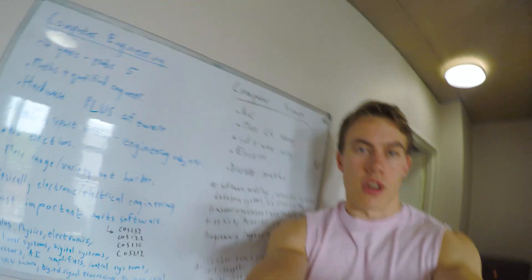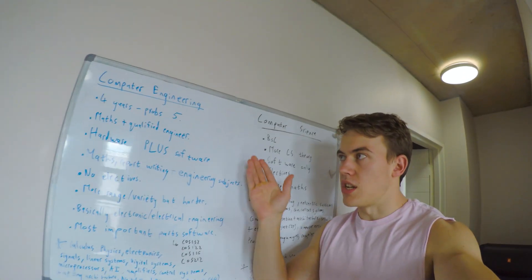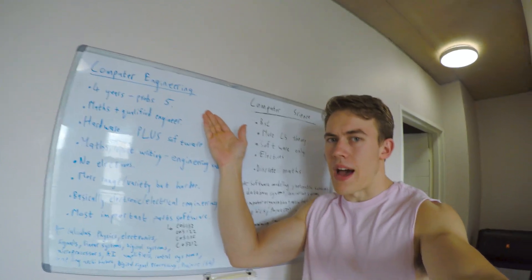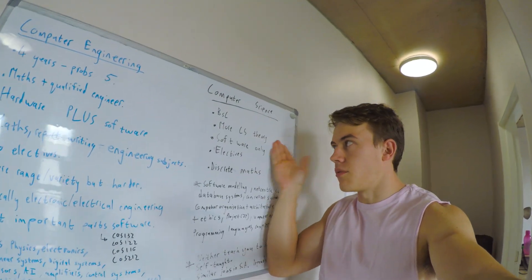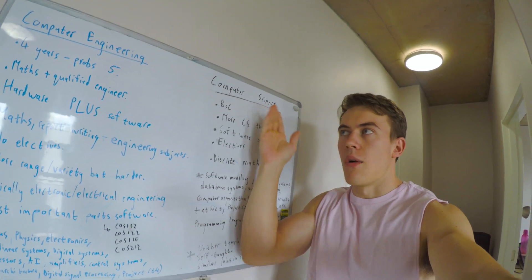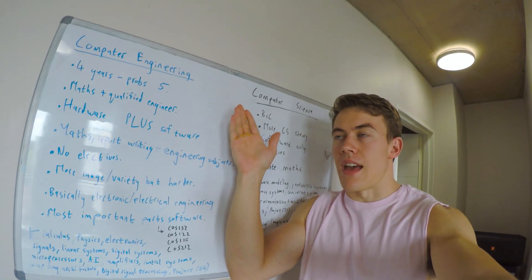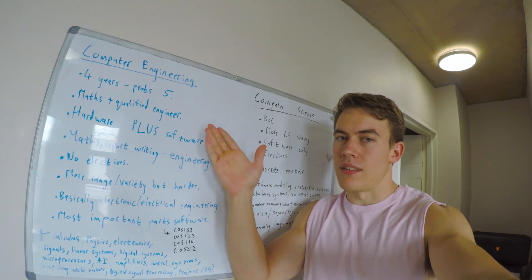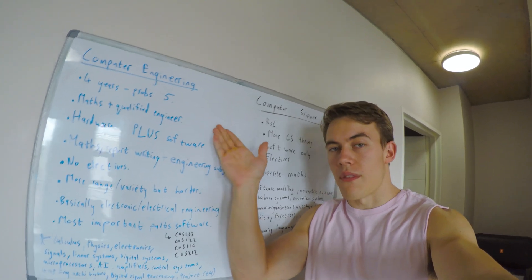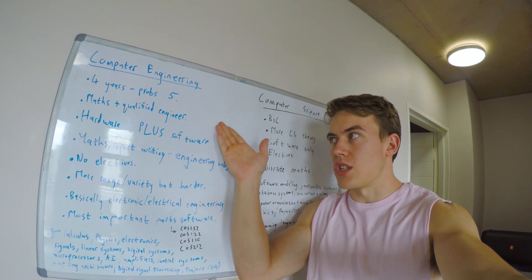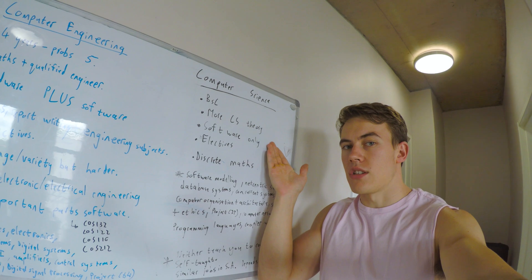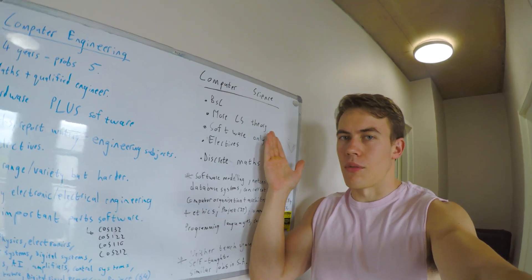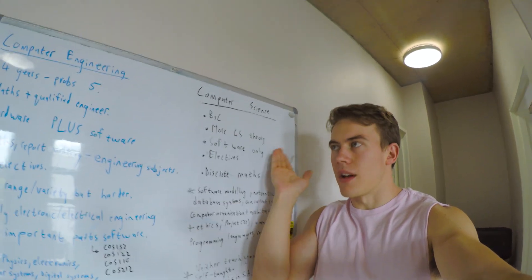Some other things to remember if you're trying to choose between them: computer engineering is a four-year degree, probably five if you're like most people and need to take the extra year. Computer science is only a three-year degree and it's a BSc, whereas computer engineering is a BNG degree. You're a qualified engineer, it's a technical profession at the end of your degree, whereas computer science is just a qualification.